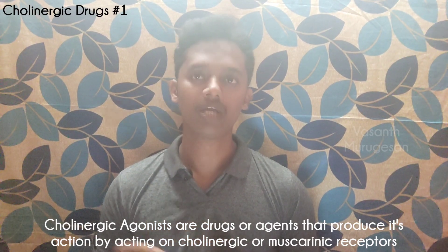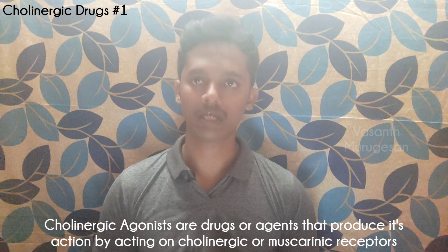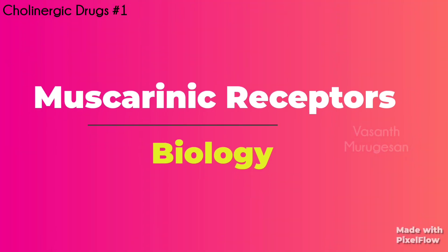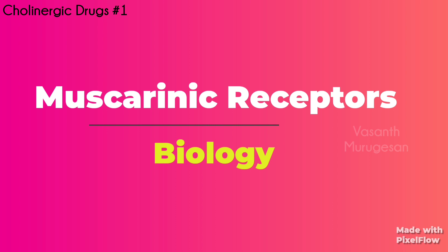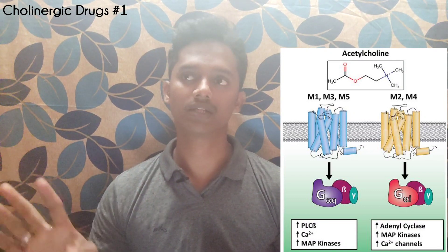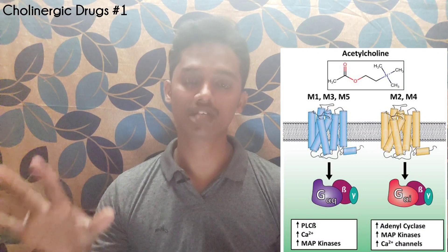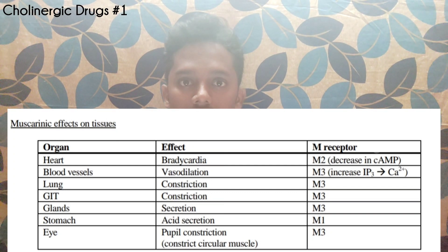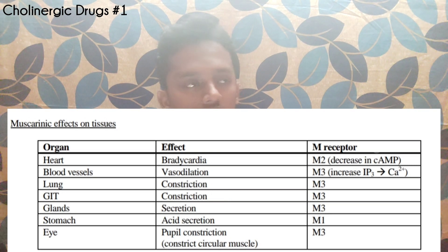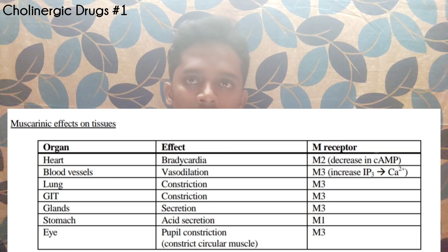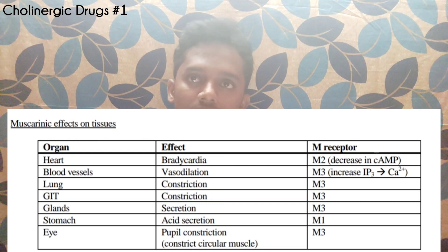So these are called Cholinergic Drugs acting on Muscarinic Receptors. Muscarinic Receptors are a type of GPCR — G Protein Coupled Receptors. In total, there are 5 types of Muscarinic receptors: M1, M2, M3, M4, and M5. Of these, only the first 3 — M1, M2, M3 — are predominant and most important. All 5 receptors are GPCRs.